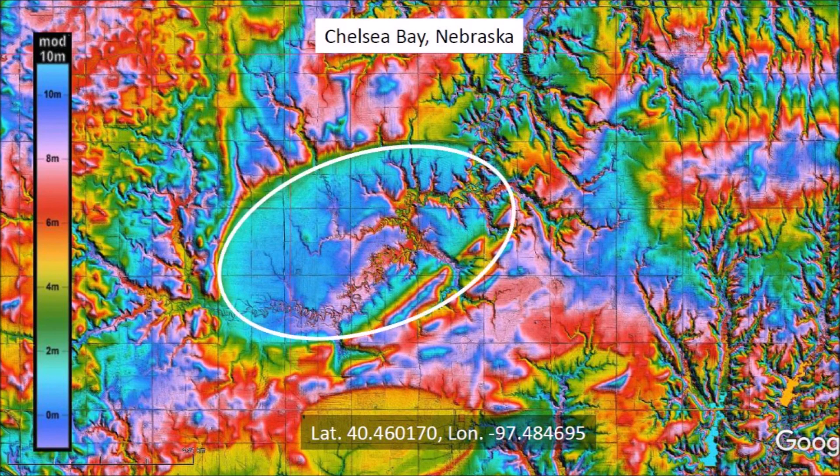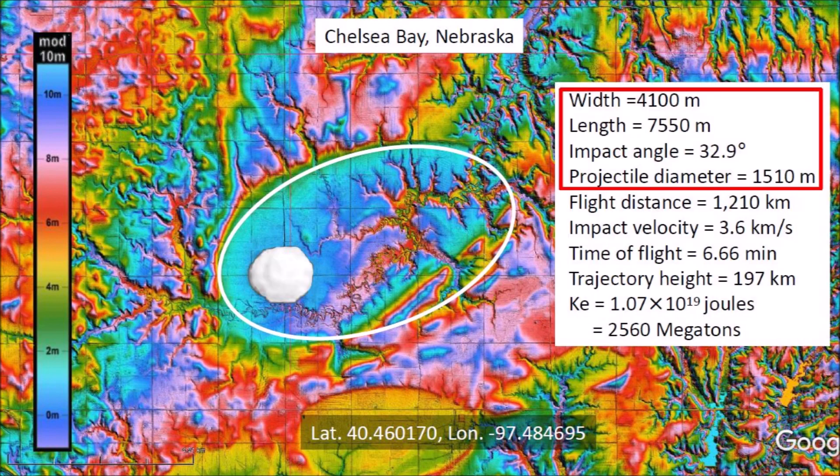Fitting an ellipse to Chelsea Bay, we notice that the ellipse fits the northern rim of the bay well, but the southeast portion of the bay has some high terrain which is not expected for a structure that originated as an inclined conical cavity and reduced its depth by viscous relaxation, as proposed by the Glacier Ice Impact Hypothesis. The width of the bay is 4,100 meters and its length is 7,550 meters — that is 7.5 kilometers or 4.7 miles. It is truly huge.